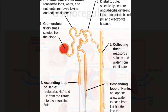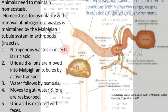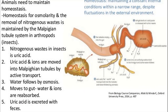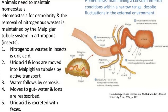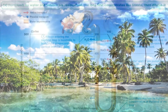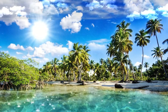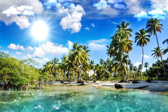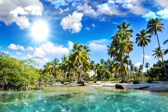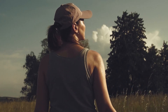Osmoregulation: Besides removing urea and uric acid from the blood, the kidneys also help in maintaining the water and salt concentration in it. This process is called osmoregulation, i.e. regulation of water and salt content. During summer, we urinate fewer times than in winter and the urine is usually more concentrated, because in summer we lose much water through sweat.